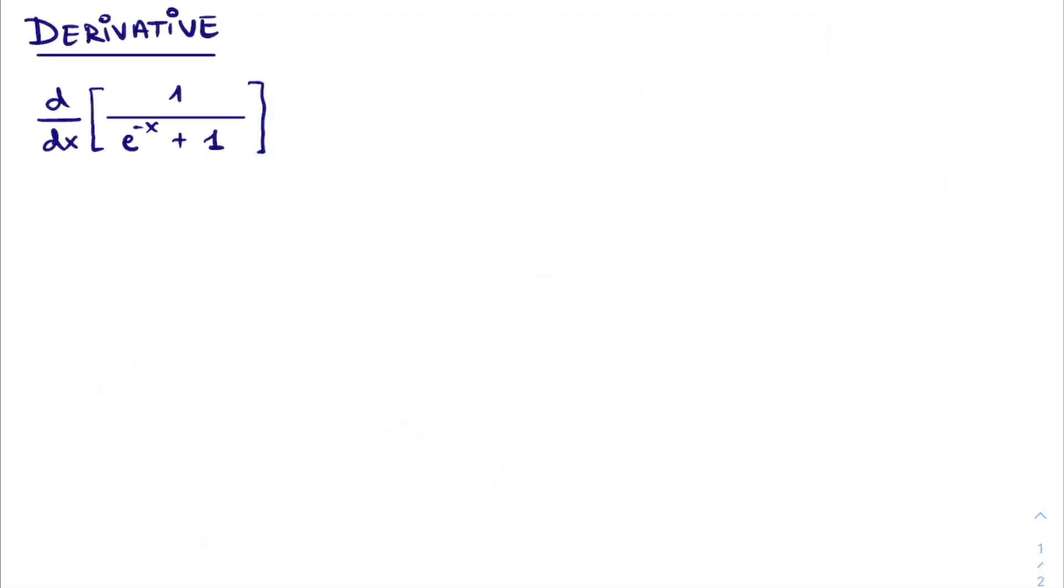Thus, we take the derivative to x of the sigmoid function. First, we immediately see that we will need to apply the chain rule. The x to which we derive is encapsulated in this e power, which itself sits in this sum, which itself again sits in the denominator.